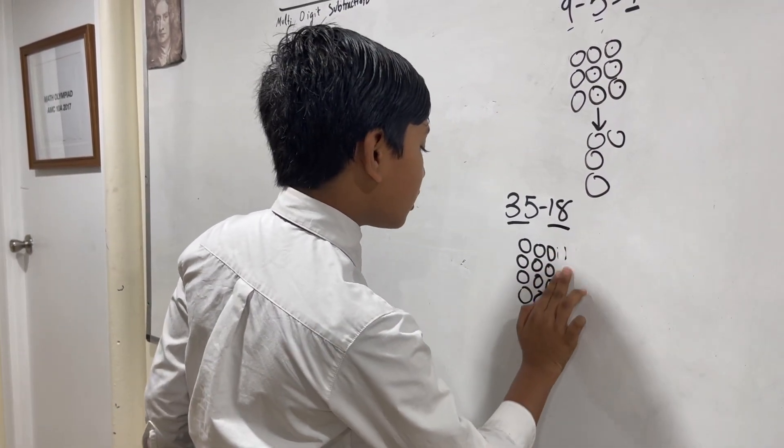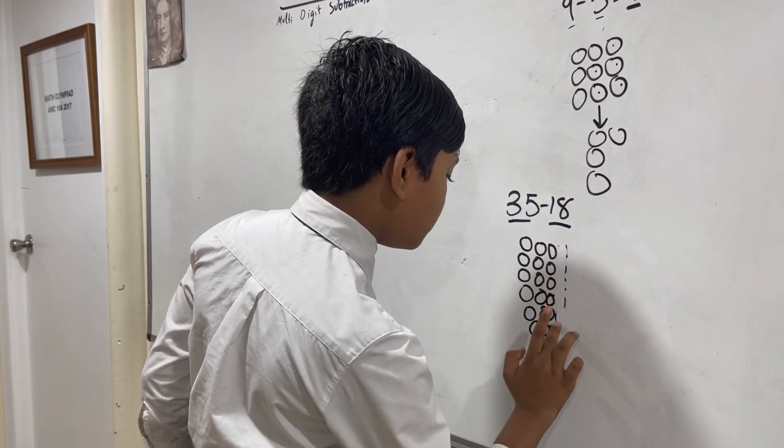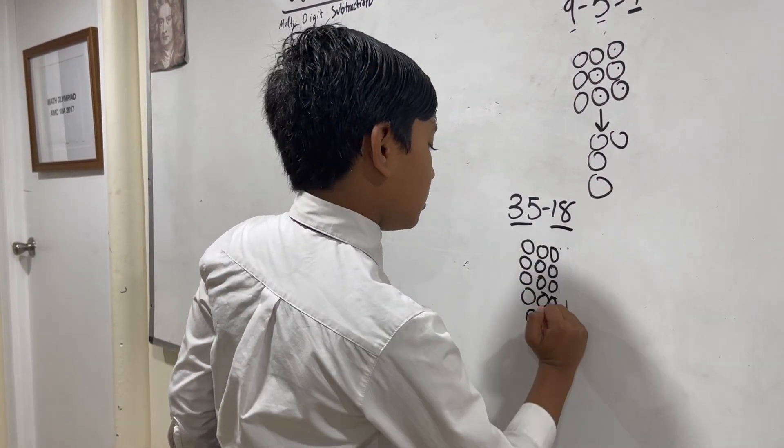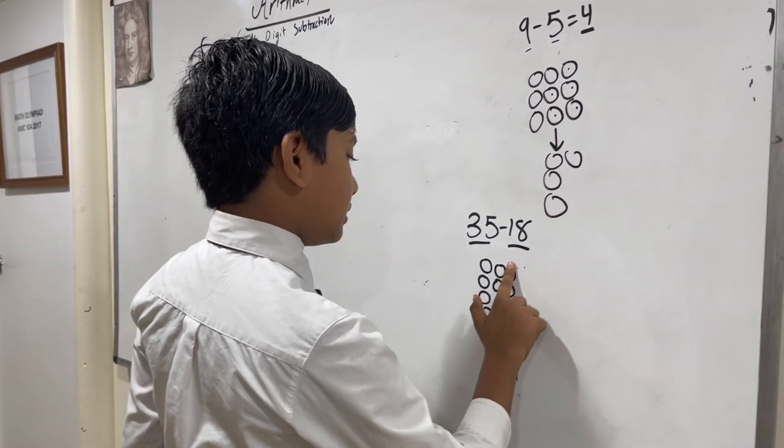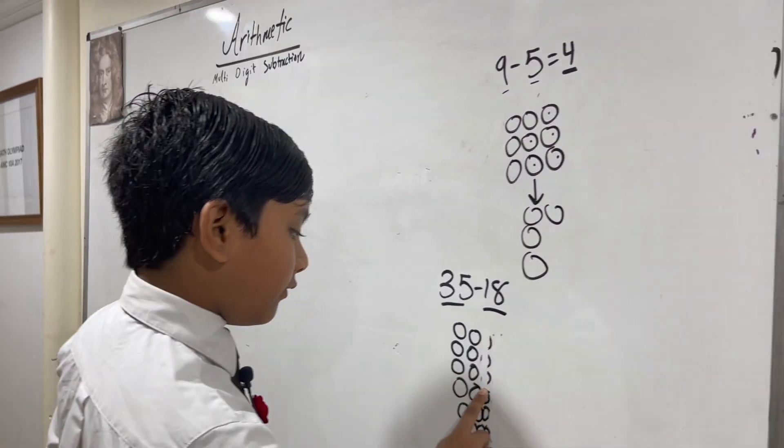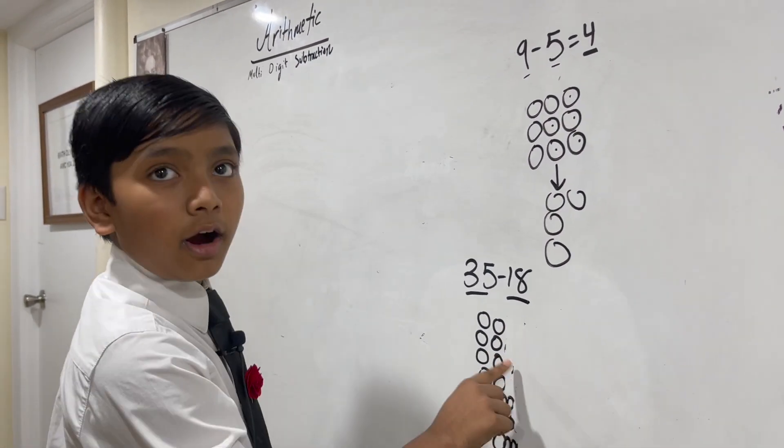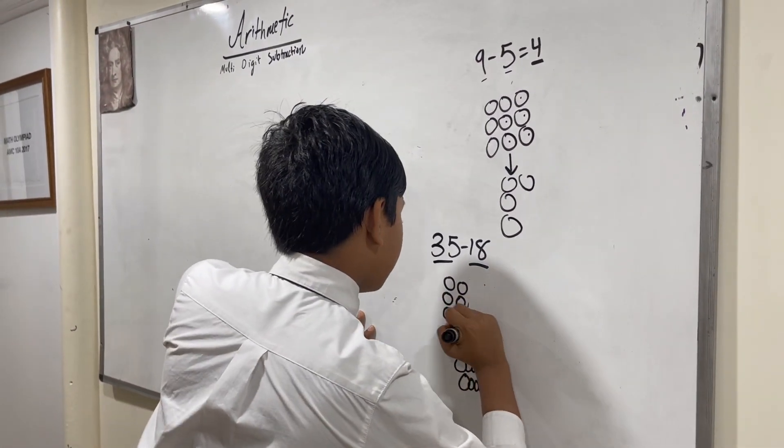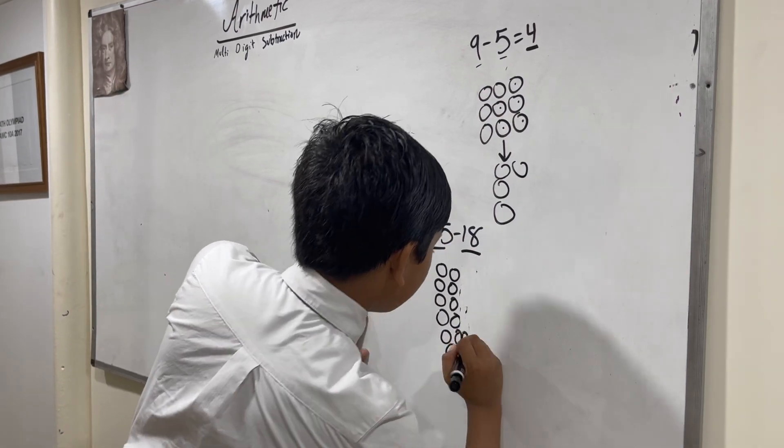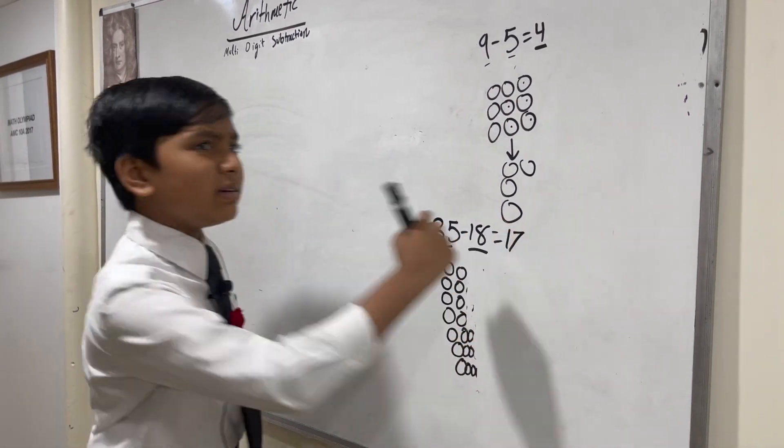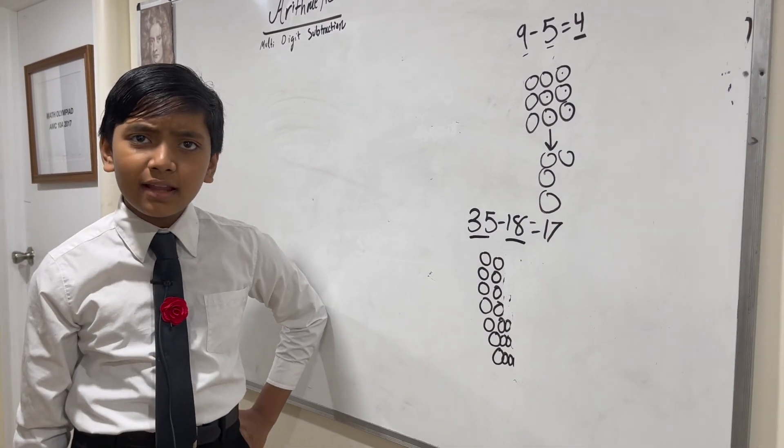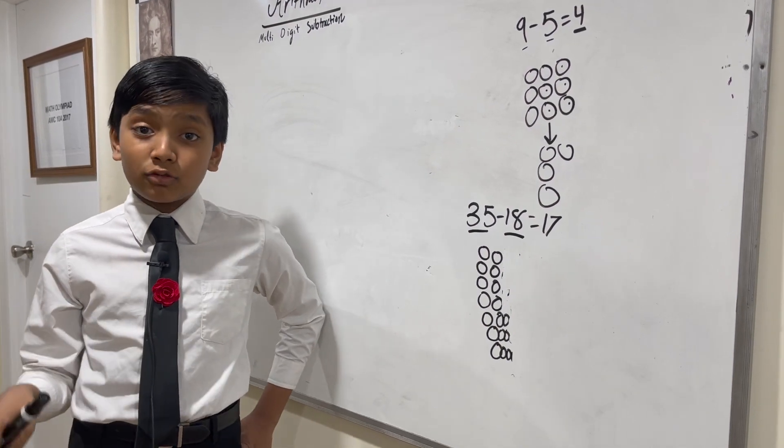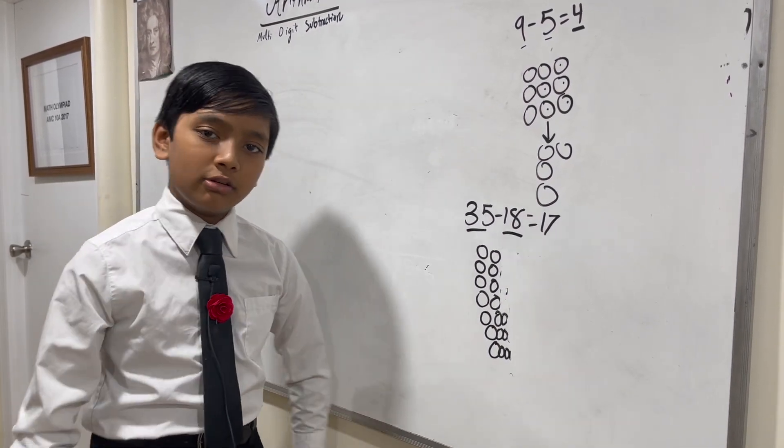These are seven of them. Now we can erase 18 of them. All right, now count them up—how many are remaining? One, two, three, four, five, six, seven, eight, nine, ten, eleven, twelve, thirteen, fourteen, fifteen. Fifteen. But that wasn't very efficient, was it? We could have done it a much quicker way. That's what I'm going to show you in this video.